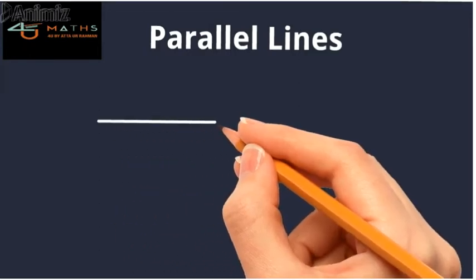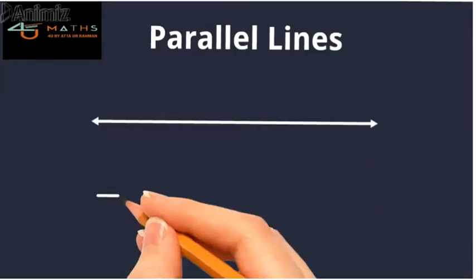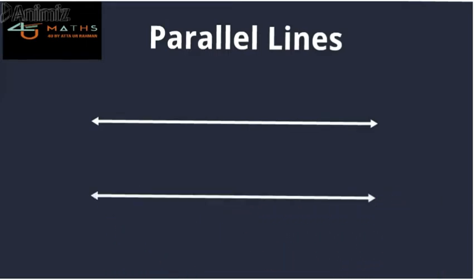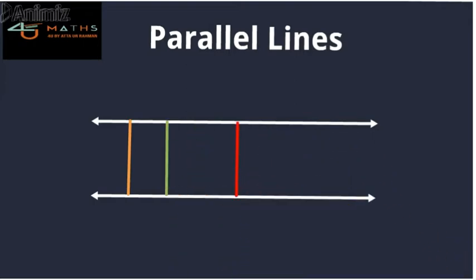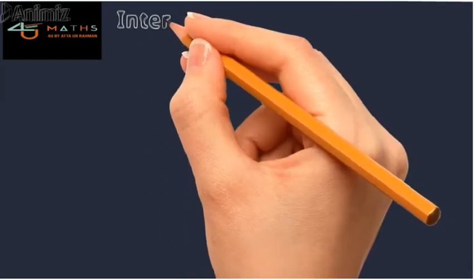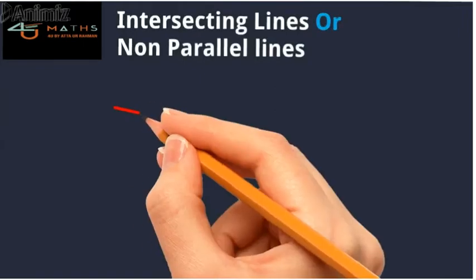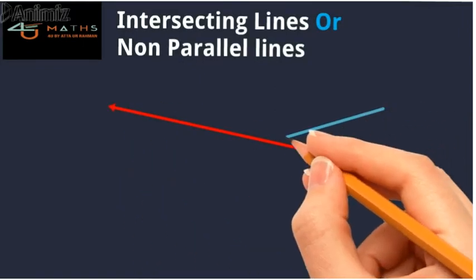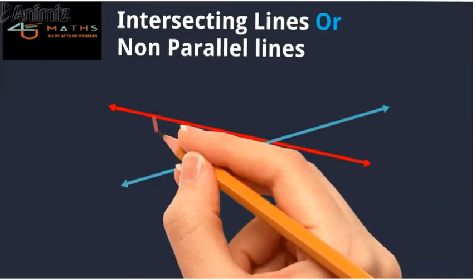Parallel lines are those lines which never intersect each other — that is, the distance between them is always the same. In other words, the altitudes of those parallel lines are always the same. Intersecting lines, on the other hand, are those which intercept each other at a specific point, meaning the length of their altitudes is always different.